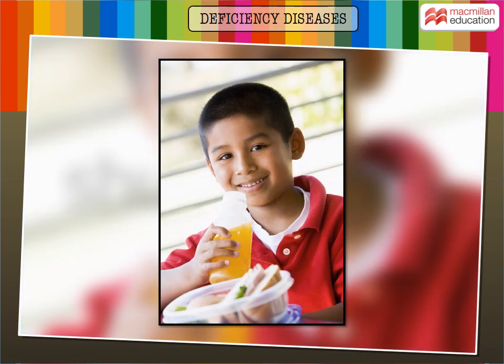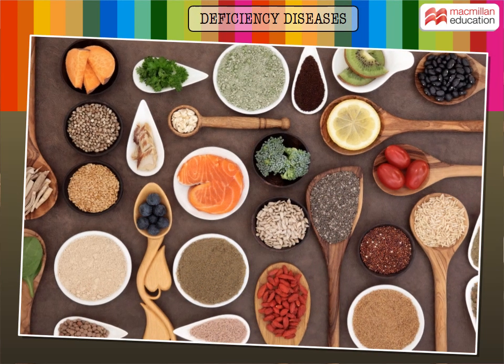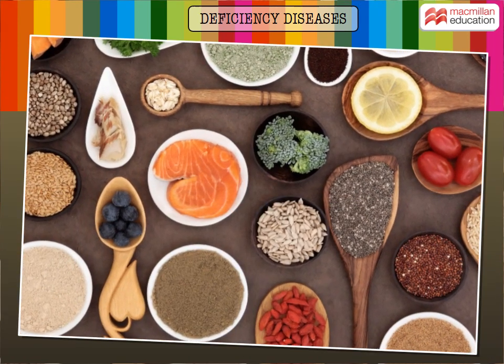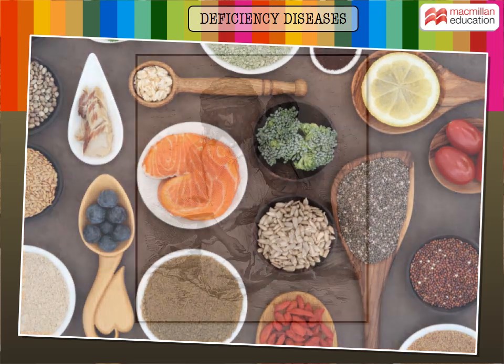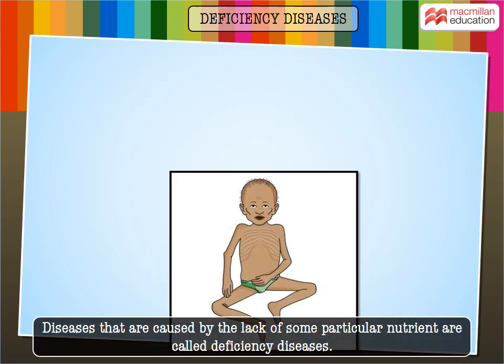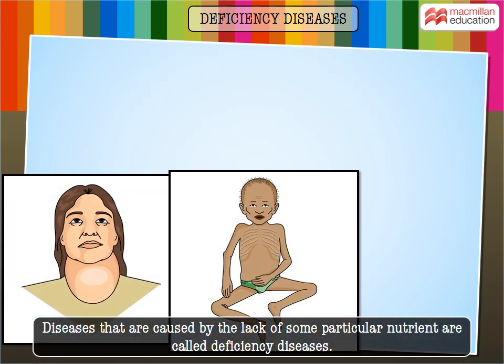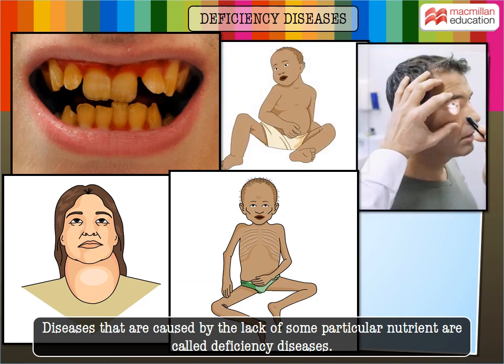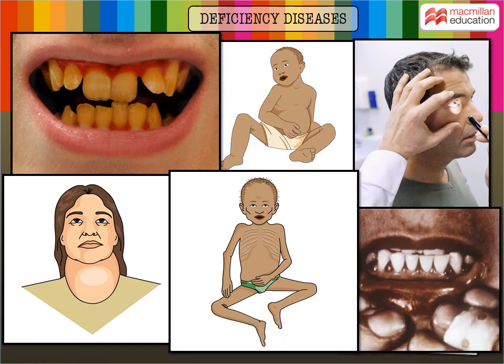It is very important to eat the right kind of food. Food has nutrients which help our body perform various functions. When the body does not get the right amount of certain nutrients, we fall sick. Diseases that are caused by the lack of some particular nutrient are called deficiency diseases.